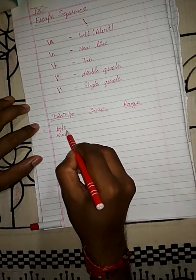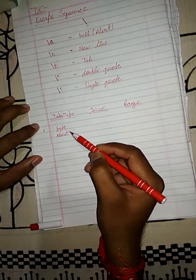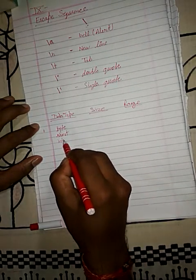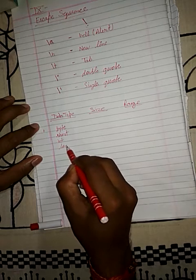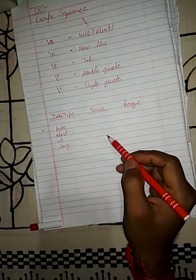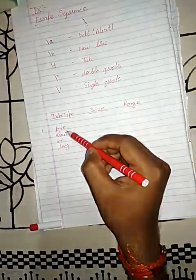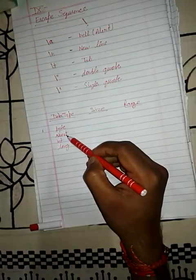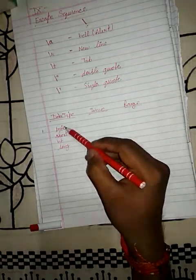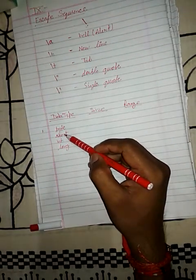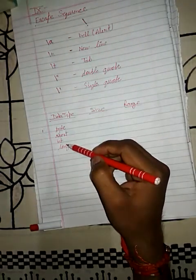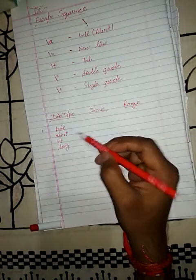The first set of data types are: byte, short, int, and long. These four data types are called the integer family because all four belong to integer numbers.